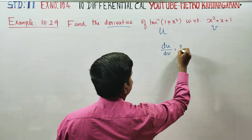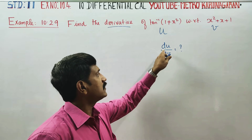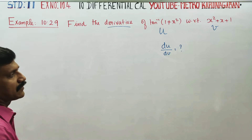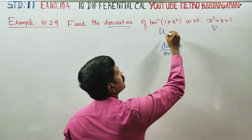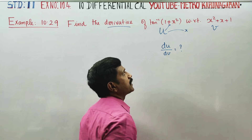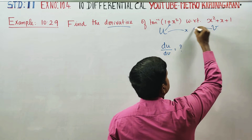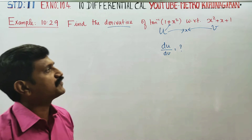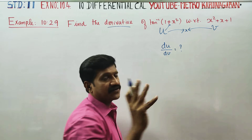What is the question? Find the derivative of u with respect to v, written as du by dv. What is the formula for this? U is a function of x, and v is also a function of x. That means u and v have a direct relationship through x.